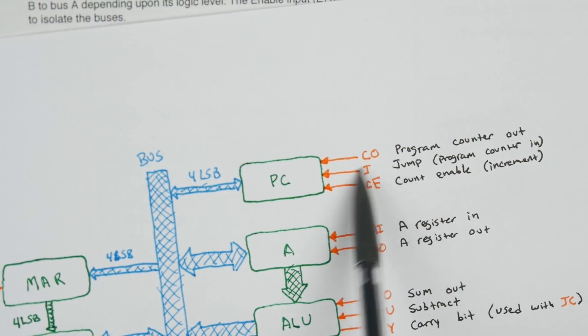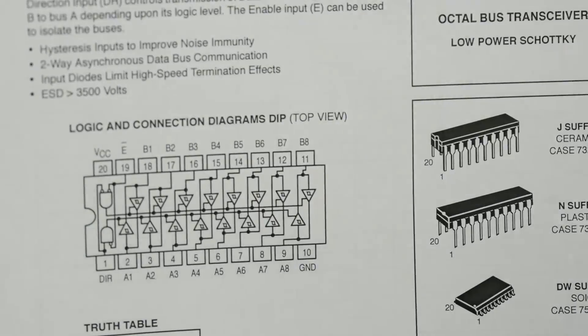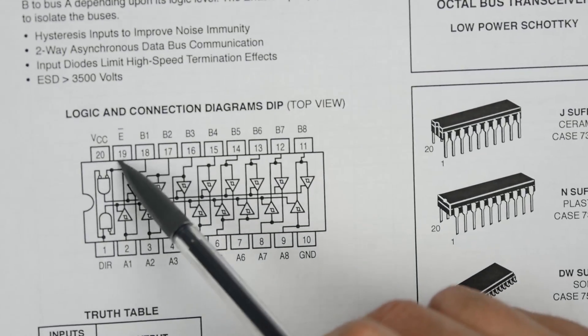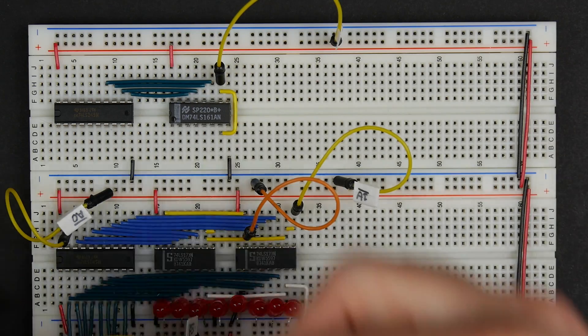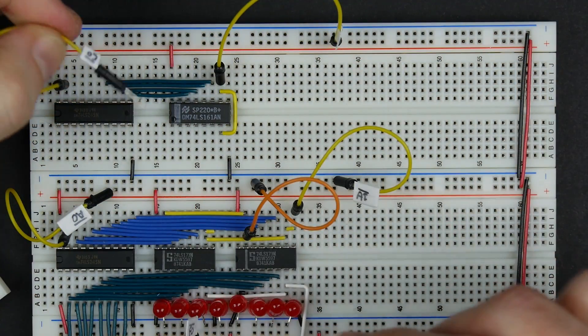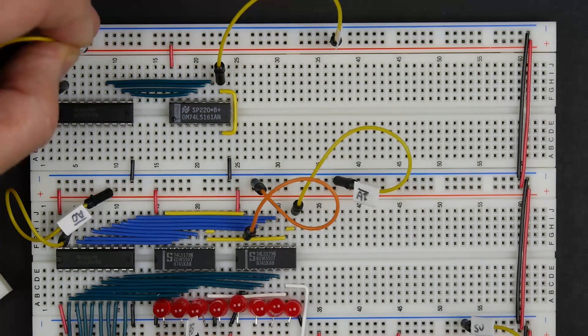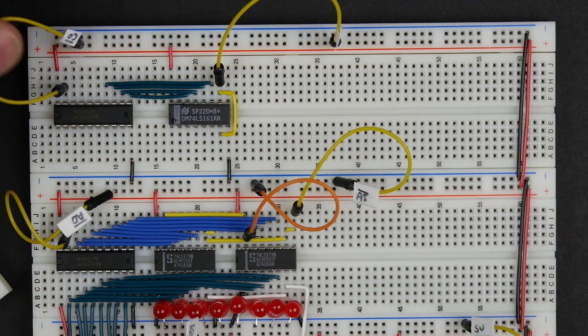Our counter out signal here controls whether the contents of the counter are going out on the bus. To do that we use our enable signal here. So this enable basically is our program counter out. So pin 19. If I hook pin 19 up here, that's our counter out signal. I'll tie that high. This is an inverted signal, so that's now currently disabled.